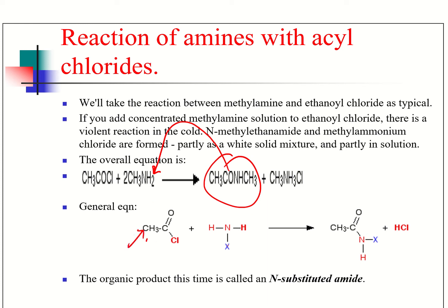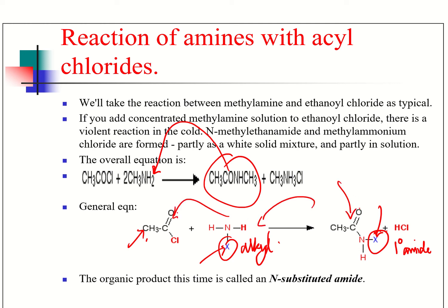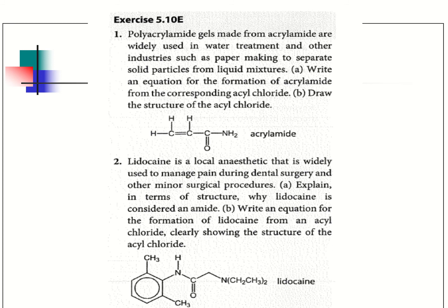If we look at an acyl chloride — here we have ethanoyl chloride — and a primary amine where X is our alkyl group, you'll see that we've made here a primary amide. You need to know the structure of your amine, know what X is, realize that X will go there, and be able to name the compound made in this reaction. Alternatively, they may give you the N-substituted amide and ask you to work out the structure of the acyl chloride. Pause the video and have a go at those questions.